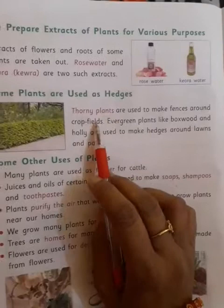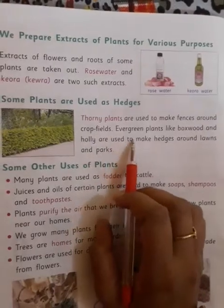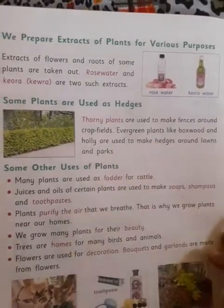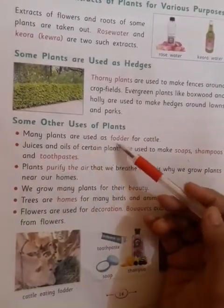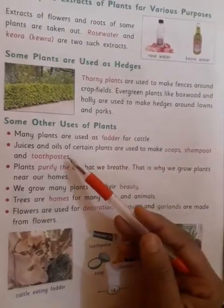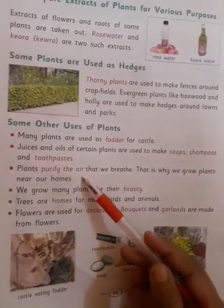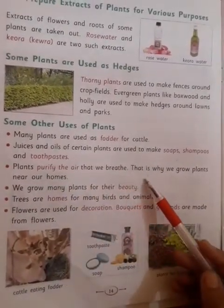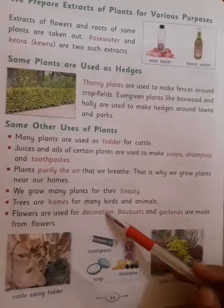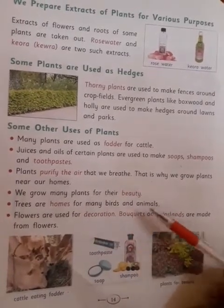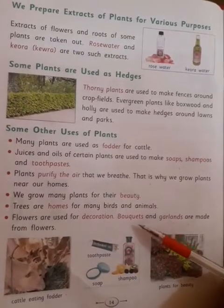Some plants are used as hedges. Thorny plants are used to make fences around crop fields, and evergreen plants like boxwood and holly are used to make hedges around lawns and parks. Plants are also used as fodder for cattle. Juices and oils of certain plants are used to make soaps, shampoos, and toothpaste. Plants purify the air that we breathe. We grow plants near our homes for their beauty, trees are homes for many birds and animals, and flowers are used for decoration — bouquets and garlands are made from flowers.